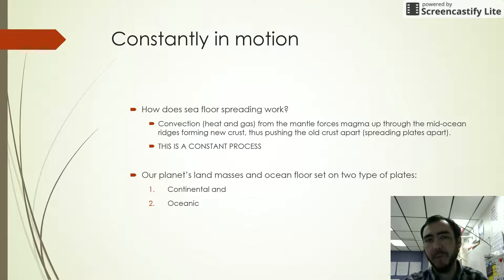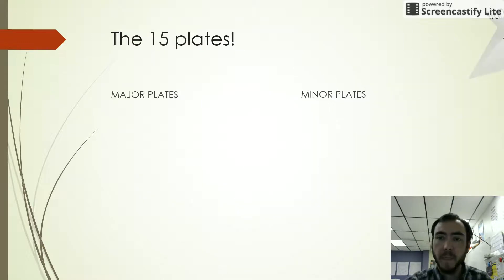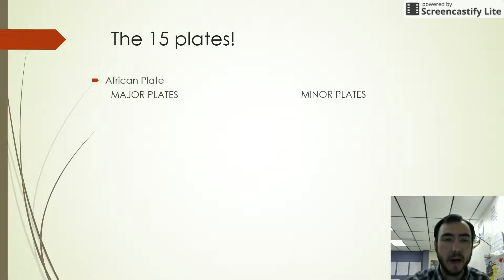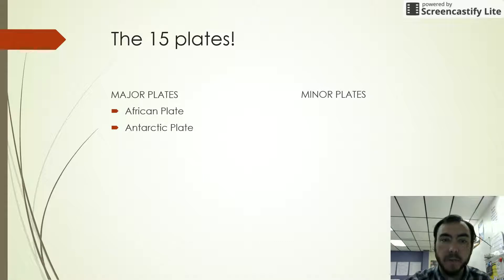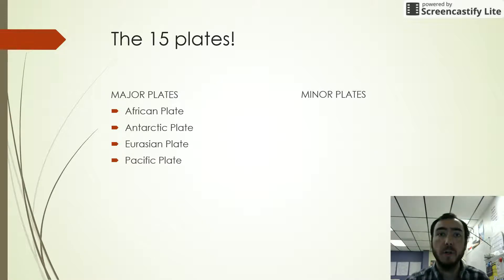Our planet's land masses and ocean floor sit on two types of plates: continental plates and oceanic plates. There are 15 different plates — major plates and minor plates. Our major plates include the plates with which our continents sit. For example, there's the African plate where Africa sits, the Antarctic plate, the Eurasian plate where Europe and Asia are, and the Pacific plate, which is an oceanic plate where the Pacific Ocean is.